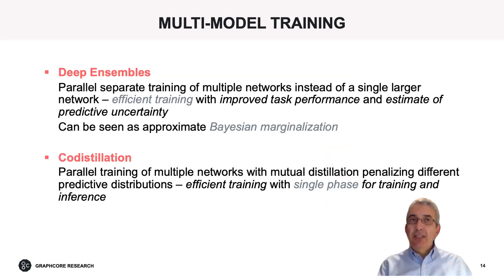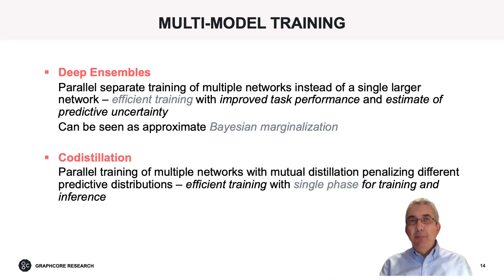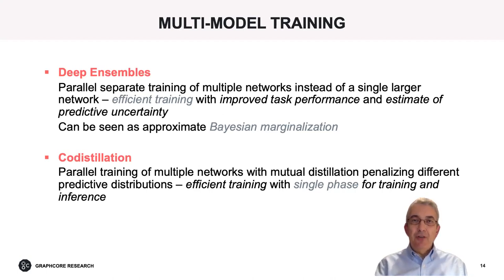Another advantage is that using deep ensembles provides not only improved performance but also improved estimates of predictive uncertainty, which is crucially important in certain applications. This approach is also a practical way of implementing approximate Bayesian model averaging and Bayesian marginalization. Having multiple models with random initialization can be exploited further with co-distillation, where instead of the different model replicas being completely independent, they periodically exchange information regarding their respective predictions.